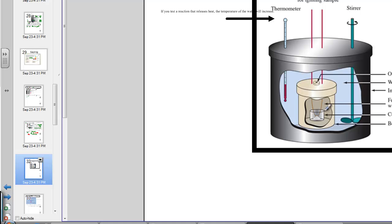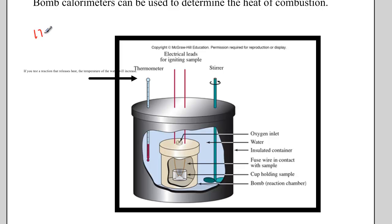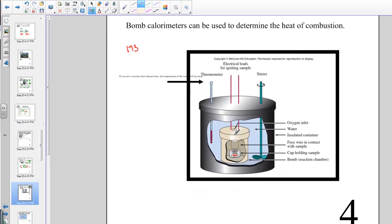We measure this with a bomb calorimeter. We place fuel inside a container surrounded by water, give it a small electrical spark to ignite it, and the combustion warms the surrounding water. How much the water temperature changes tells us how much energy was released by that particular fuel. Different fuels have different heat content, all determined in this laboratory setting.